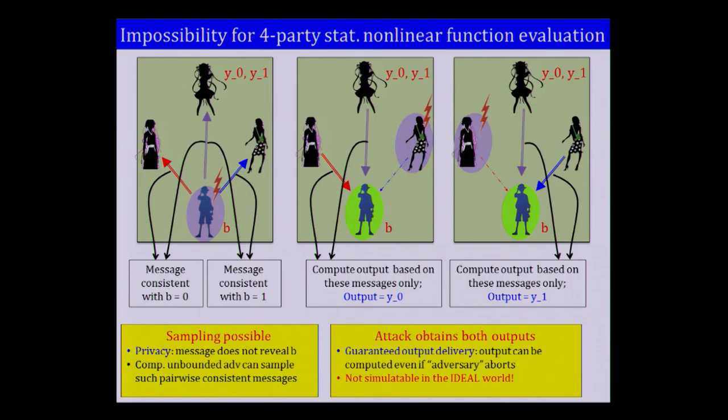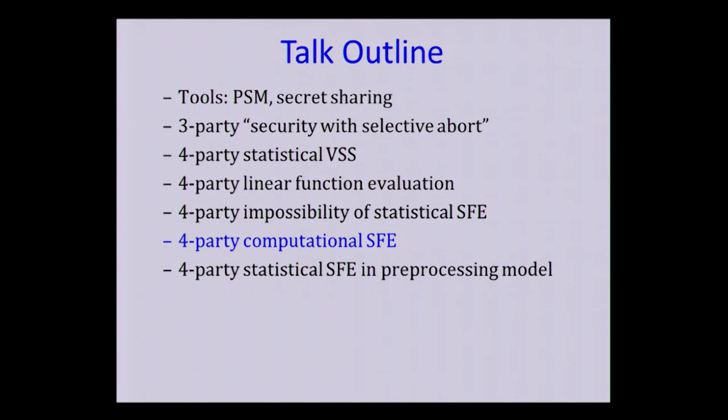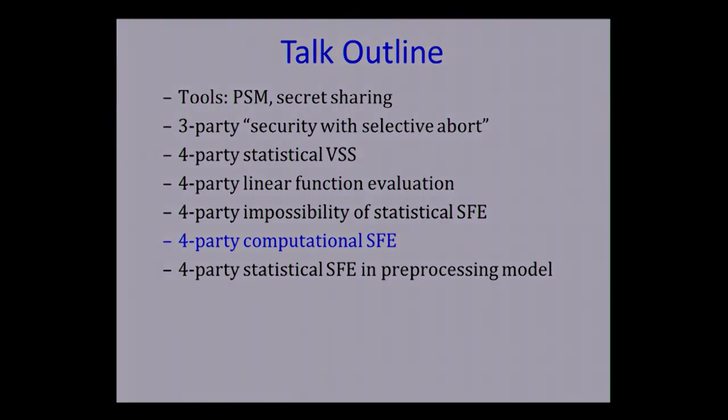The fundamental reason is that privacy and guaranteed output delivery come into conflict with each other. However, this is only an impossibility for statistical security for nonlinear function evaluation. Next, we look at computational SFE and see how we can bypass these results.